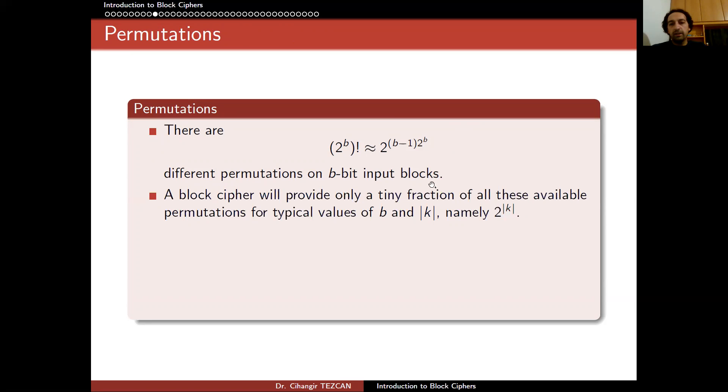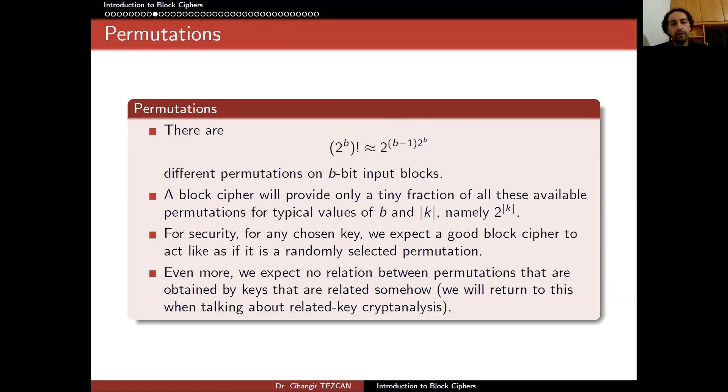So a block cipher will provide only a tiny fraction of all these available permutations for typical values of b and k, namely 2 to the k. So 2 to the k is far less than this number. For security for any chosen k, we expect a good block cipher to act like as if it is a randomly selected permutation. Even more, we expect no relation between permutations that are obtained by keys that are related somehow. We will return to this when we are going to be talking about related key cryptanalysis.